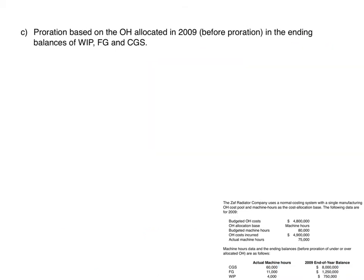The third method for closing any under or over allocated overhead is to prorate based on the overhead allocated in the ending balances of work in process, finished goods, and cost of goods sold. The first step is to take the $4,500,000 total applied overhead and allocate it to each account using the $60 per machine hour rate times the actual machine hours for each account.